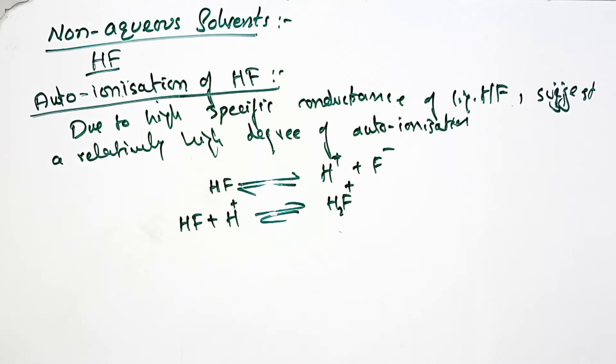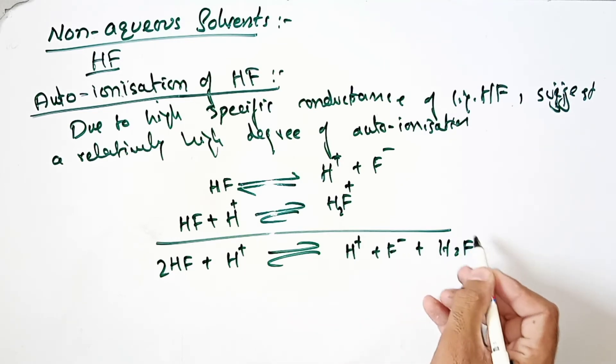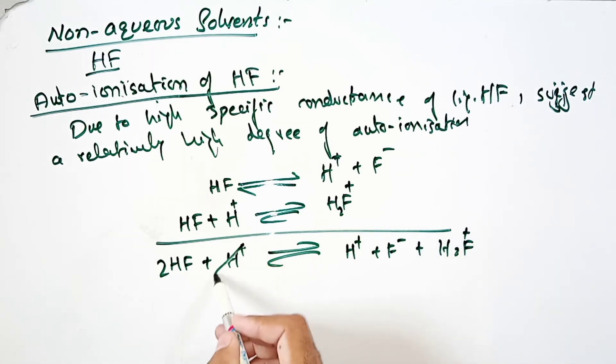Due to H2F+, let's suppose we add the right-hand side and left-hand side. Here is HF, 2HF plus H+, it will have H+ plus F- plus H2F+. Here is on the left side H+ and right side H+, it will cancel, so the reaction will become 2HF can give us F- plus H2F+.